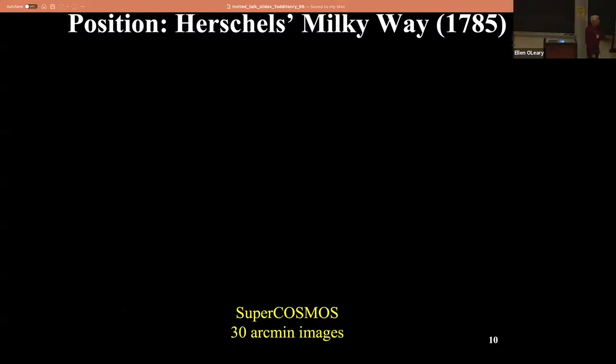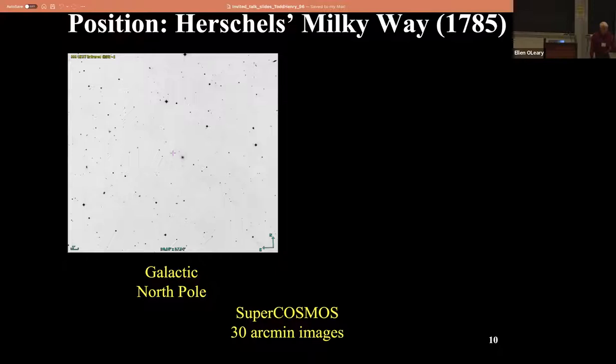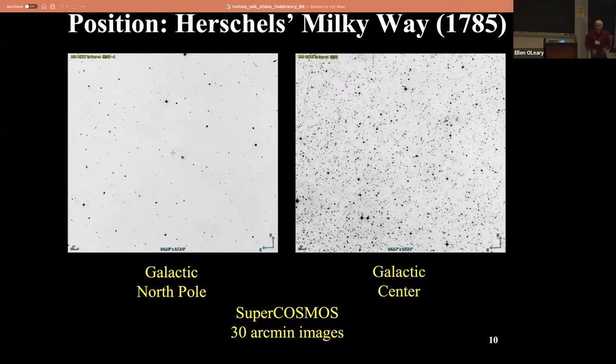These are nice pictures taken using the SuperCOSMOS dataset, which had scanned thousands of glass plates taken from the 1950s up through the 1990s in an entire survey of the sky. You can look toward the galactic north pole and toward the galactic center.